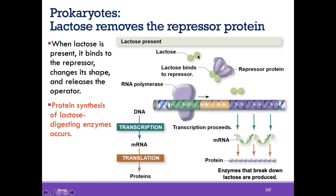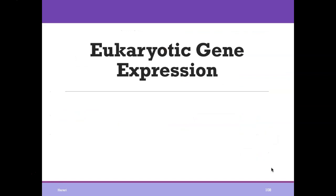Only when lactose is present will enzymes to break down lactose be expressed. When lactose is no longer present, those enzymes won't be made anymore. The two French biologists Jacob and Monod, who discovered the lac operon, concluded that the genome contains not only a series of blueprints, but a coordinated program of protein synthesis and means of controlling its execution. We see this complexity in prokaryotes, and there is even more complexity in eukaryotes.